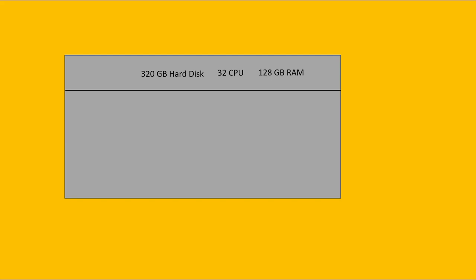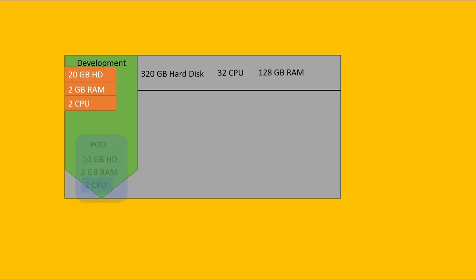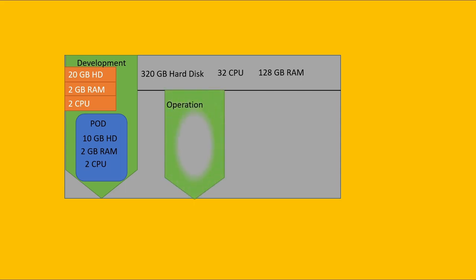Let's understand with the help of a 3D animation. We have one cluster with resources: 320 GB hard disk, 32 CPU, and 128 GB RAM. We create a namespace called 'development' and assign a quota of 20 GB hard disk, 2 GB RAM, and 2 CPU. We create a pod inside this namespace, then create a new namespace called 'operation' with another pod. Both pods cannot see each other because of the namespace — namespaces provide isolation of resources.